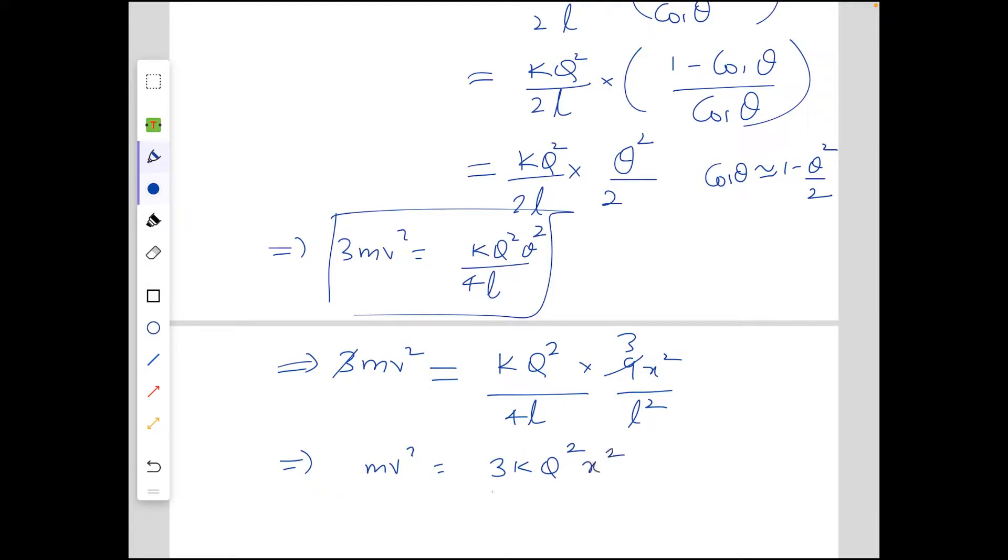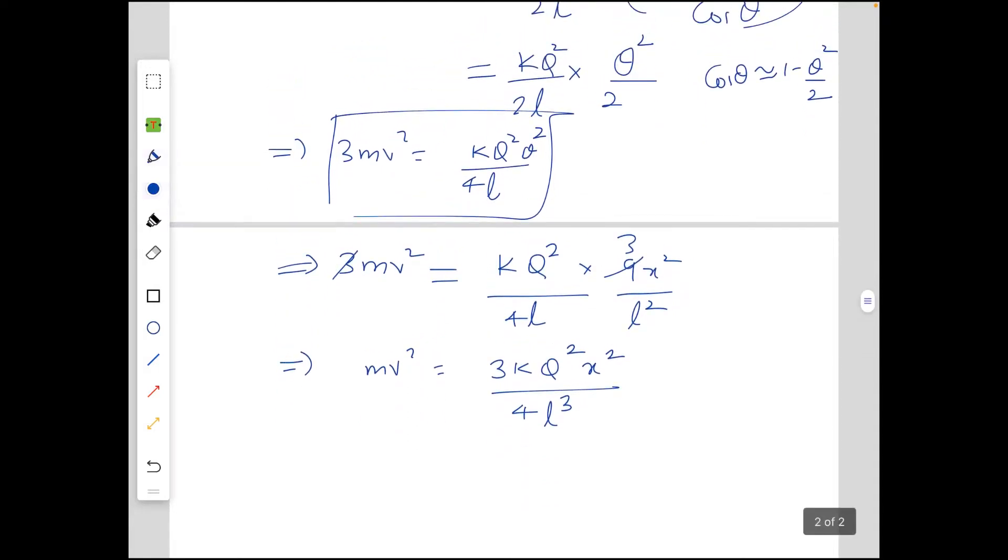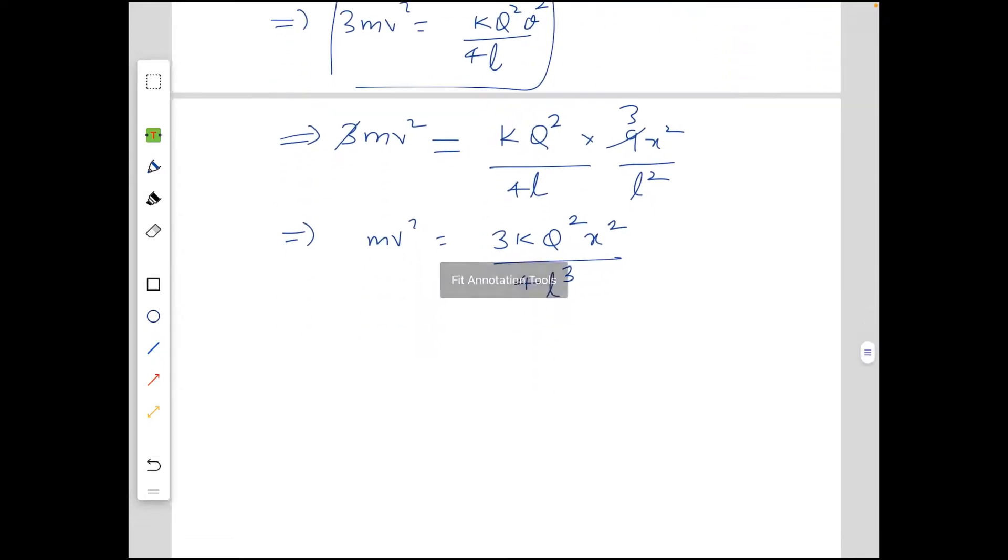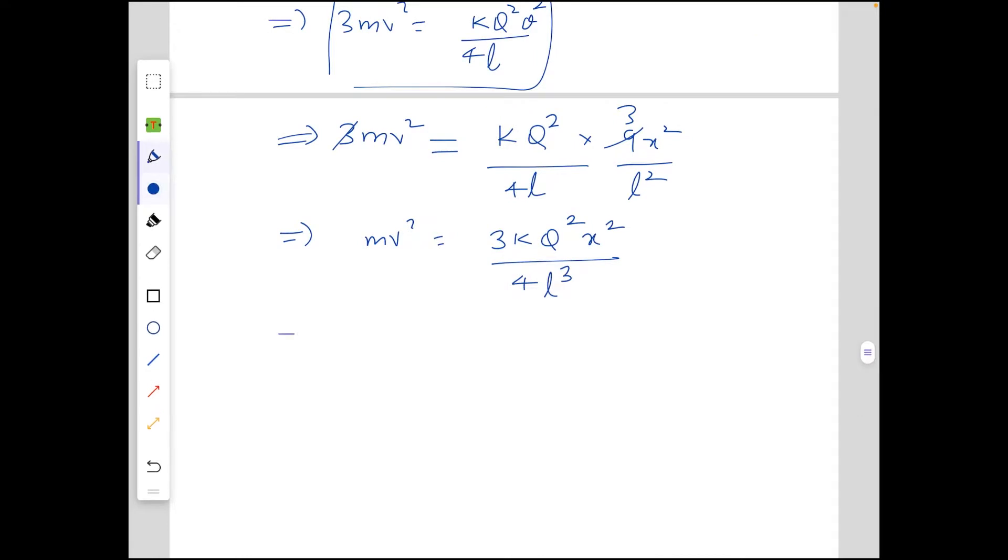Now we need to find the equation of motion. We can observe this is in the form of simple harmonic motion. Let's differentiate both sides with respect to time. We get 2mV·a equals 3kQ²/(4L³) times 2x·(dx/dt) which equals velocity. We can cancel V and dx/dt here.